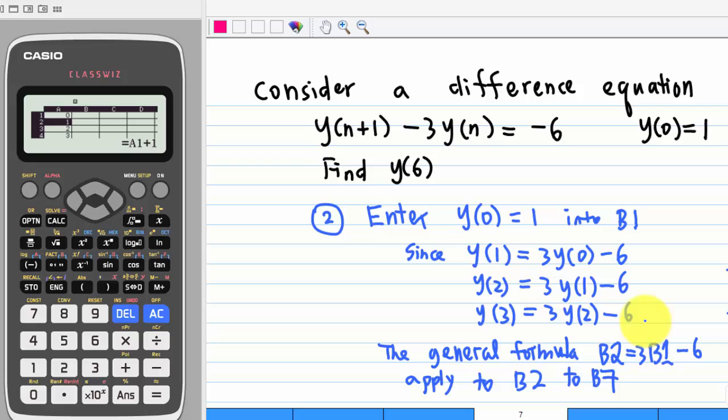Next we are going to enter y(0)=1 into B1 and then compute y(1), y(2), y(3) all the way to y(6). Note that y(1)=3y(0)-6, y(2)=3y(1)-6, y(3)=3y(2)-6. In general, you can use a formula in B2 equal to 3B1-6, where B1 contains the information of y(0), and then repeat this formula to B7.